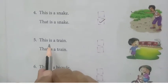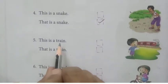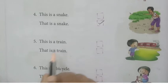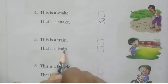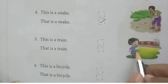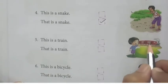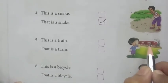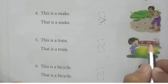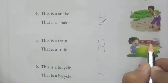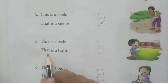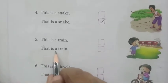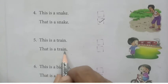Number 5. 'This is a train' or 'That is a train'? Train is nearby or far away? It is far. So, what we have to take? 'That.' That is a train.